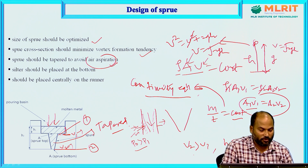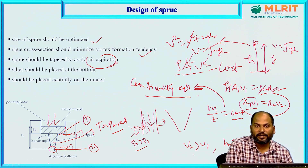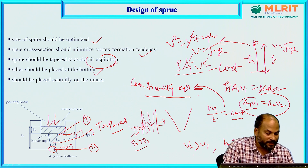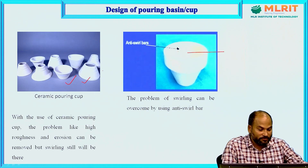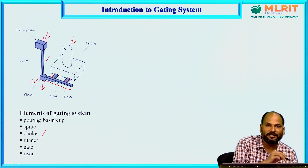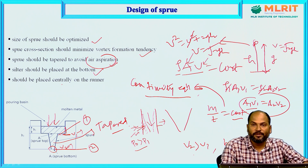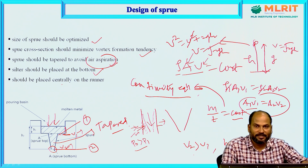The next design point is there should be a filter at the bottom of the sprue, so that any contaminants or impurities coming with the molten metal can be filtered out. The last point is that the sprue should be placed centrally — placement within the gating system is very important. That is all for today's lecture. Next we will see the design of the choke and the design of the runner. Thank you.